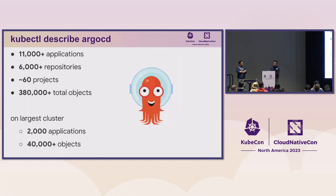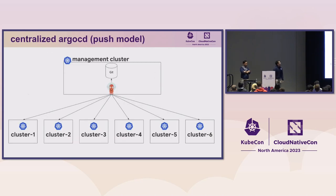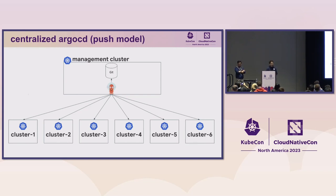These 11,000 applications come from 6,000 repositories across 60 different projects. Argo CD watches more than 380,000 total objects. On our largest cluster, we run 2,000 applications and Argo CD watches over 40,000 objects. We adopted a simple centralized Argo CD instance model, which is technically a push model, or what some call a hub and spoke model.